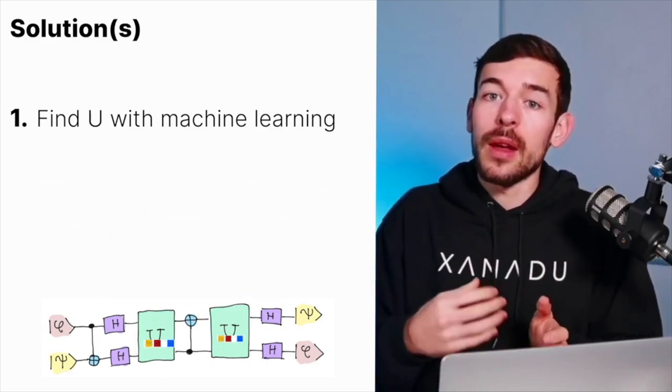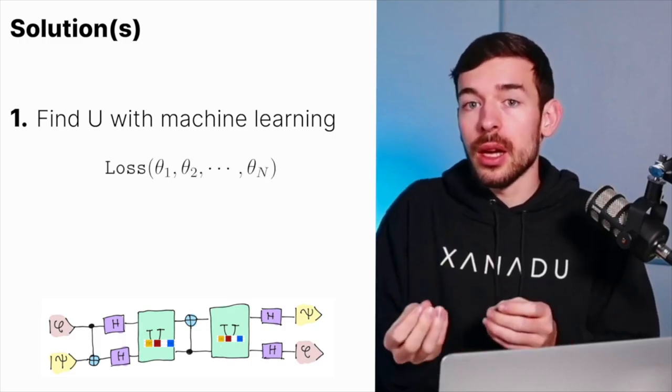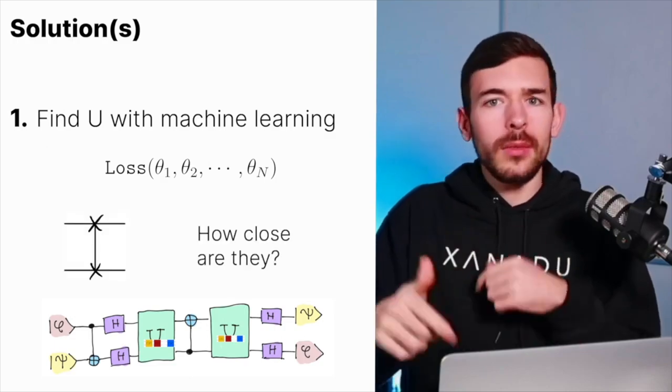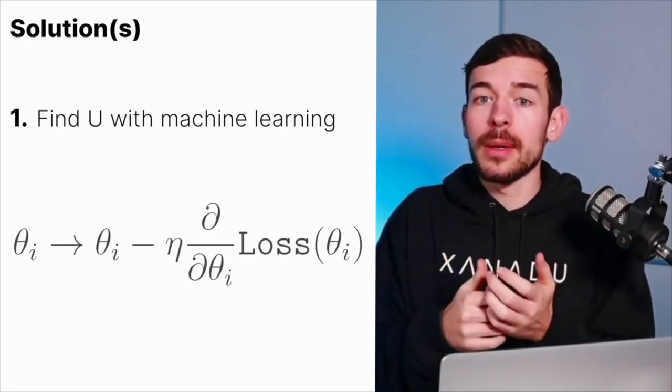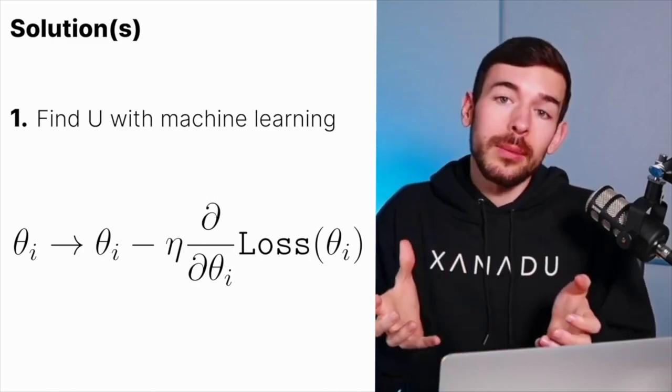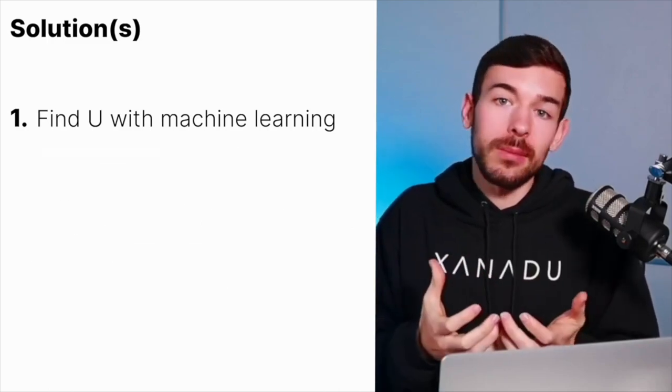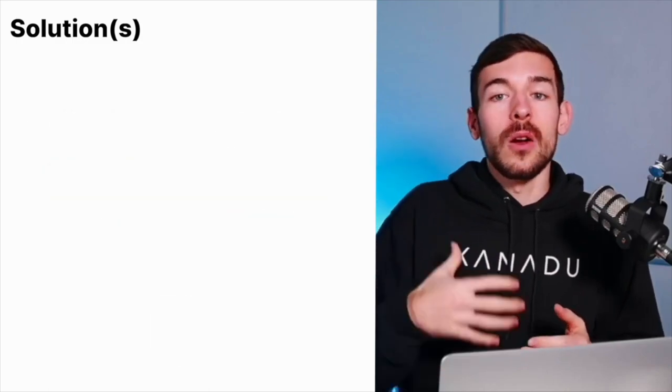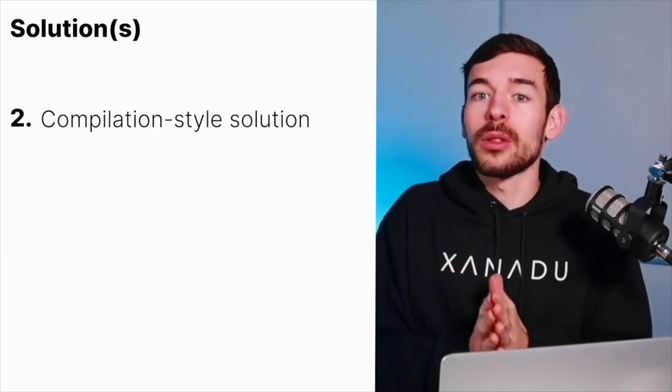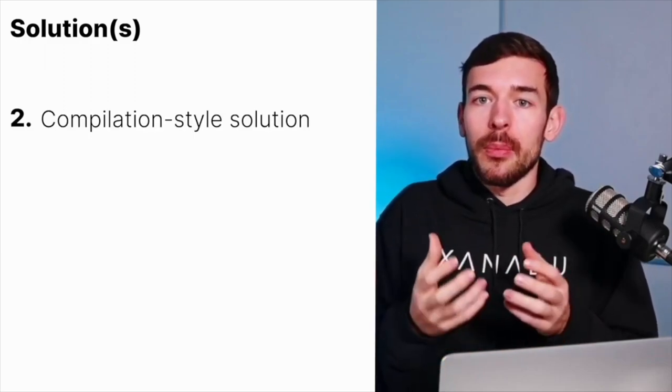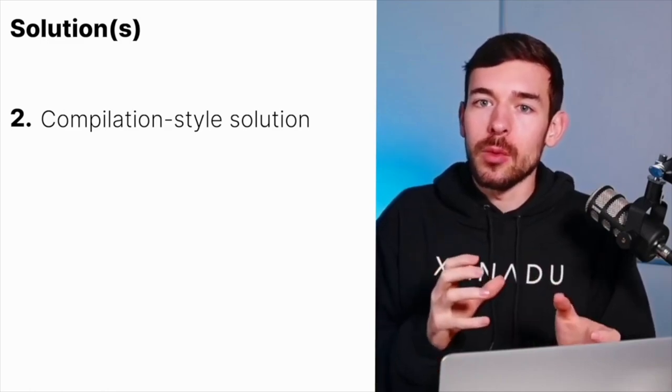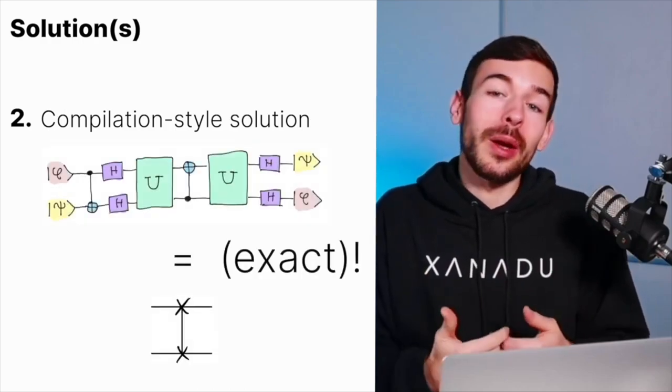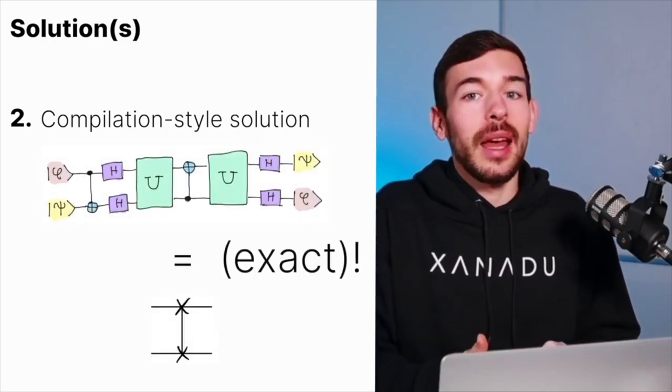So after that, we have to create a loss function that checks how close is now this whole thing to the SWAP gate. So if we update these parameters with regards to that loss function, we are going to find an approximation to the U that we were looking for. However, on the other hand, this compilation style, what it's going to do is play with the properties that we have, equivalence between one gate and another, in order to find an exact solution. And that's the one that we are going to see today that actually is not so difficult.